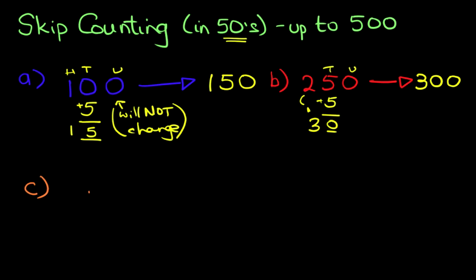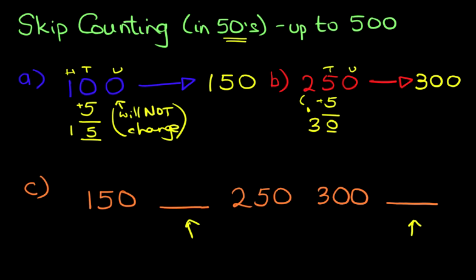Now let's have a look at a different example. We've got 150, then we've got a blank, 250, 300, and we've got a blank. So in this one, we've got two blanks, 1, 2. And we have to work out what they are. We are counting in 50s. So let's start with the first one.